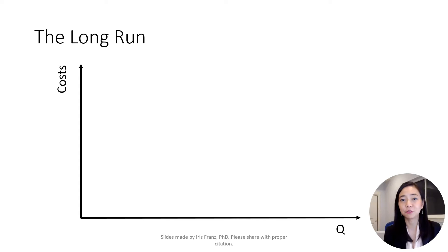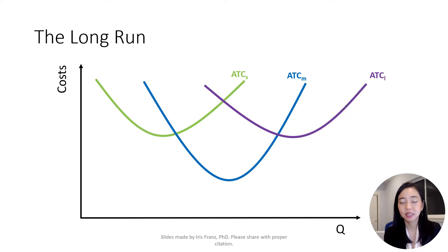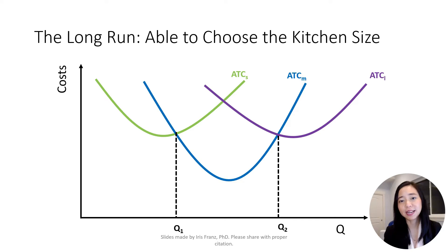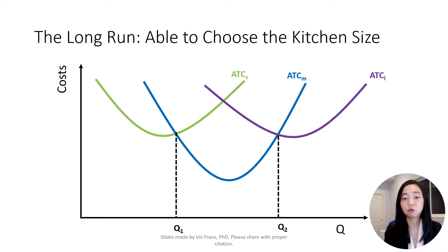Let us imagine that a restaurant can have three sizes of the kitchen in the long-run: small, medium, and large. Each size of the kitchen has its corresponding average total cost curve — we call them ATCS, ATCM, and ATCL, where S, M, L stands for small, medium, and large. In the long-run, we are able to change the size of the kitchen. Therefore, in the long-run, if we are producing a quantity between 0 and Q1, we will select a small kitchen.